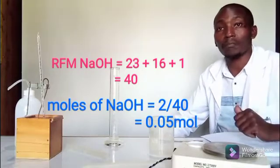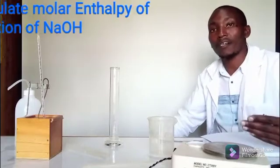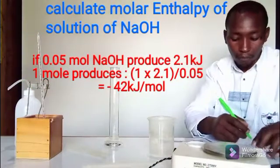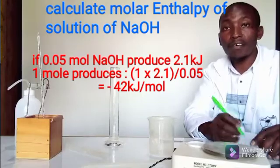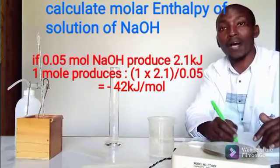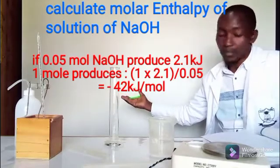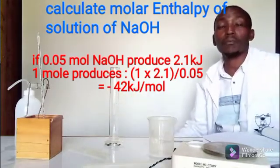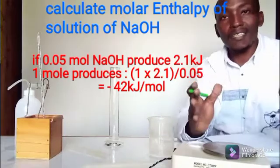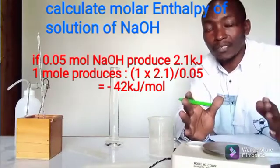The next question is to calculate the molar heat of solution. We argue: if 0.05 moles of sodium hydroxide gives a heat change of 2.1 kJ, what about one mole? Working that out, the molar enthalpy of solution is 42 kJ/mol — that is the heat change that occurs when one mole of sodium hydroxide is dissolved in water to form a very dilute solution.